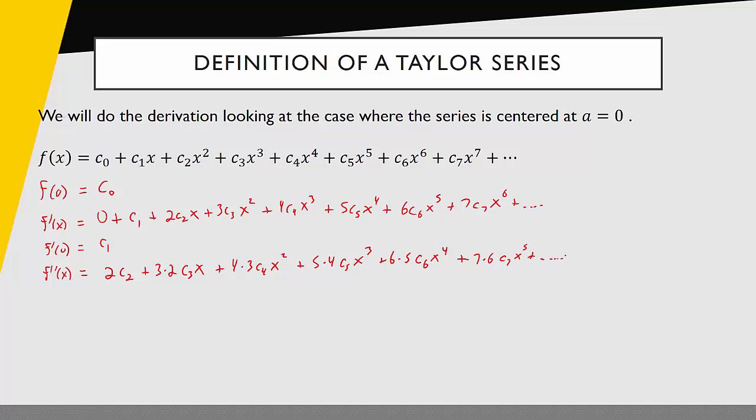Once again these values should match at x equals zero. So on the left I get the second derivative evaluated at zero, on the right I'd get 2 times c2. And so I almost have that value for that constant. All I have to do is divide both sides by 2. So now I know that c2 is equal to f''(0) divided by 2. Let's keep going.